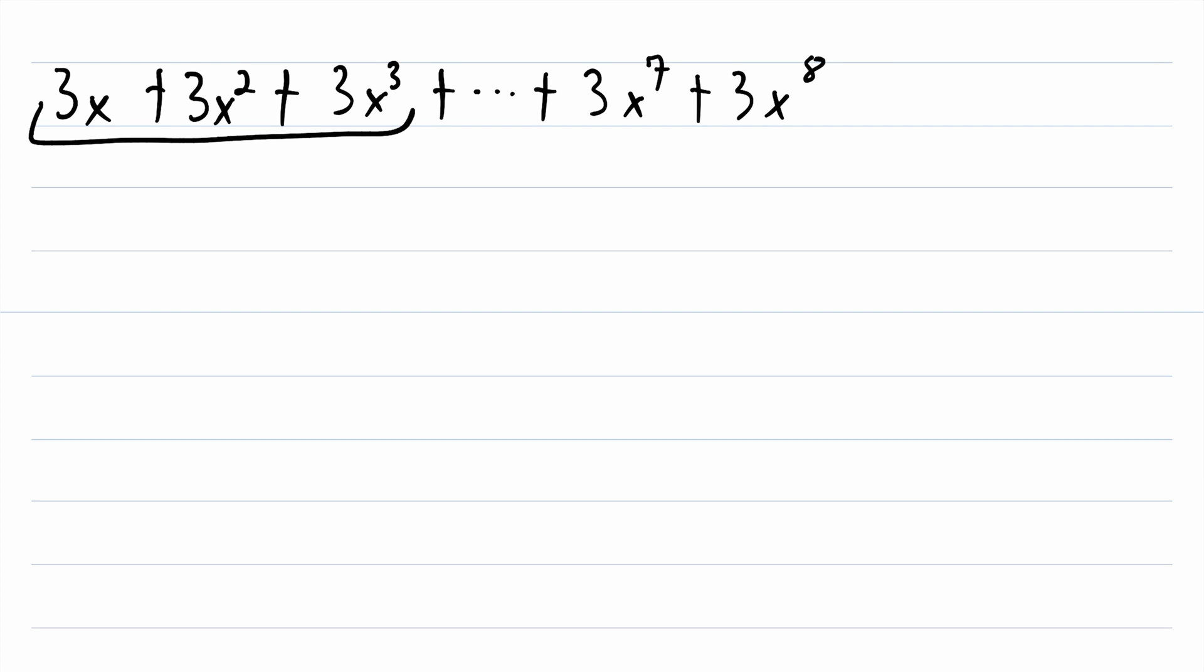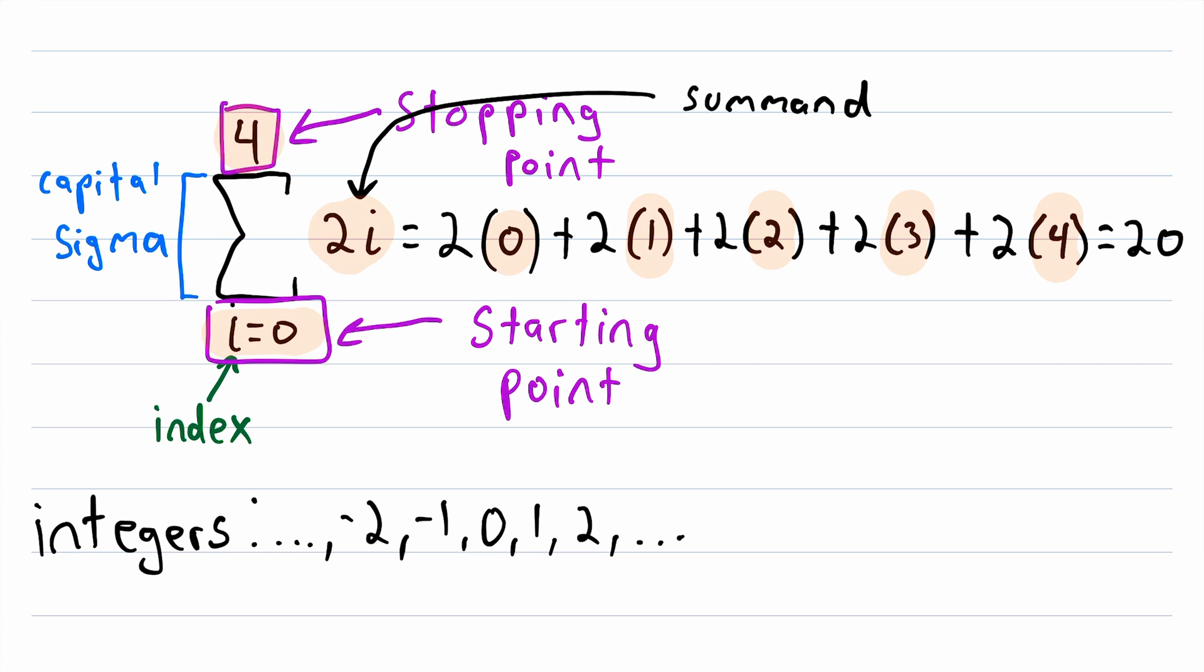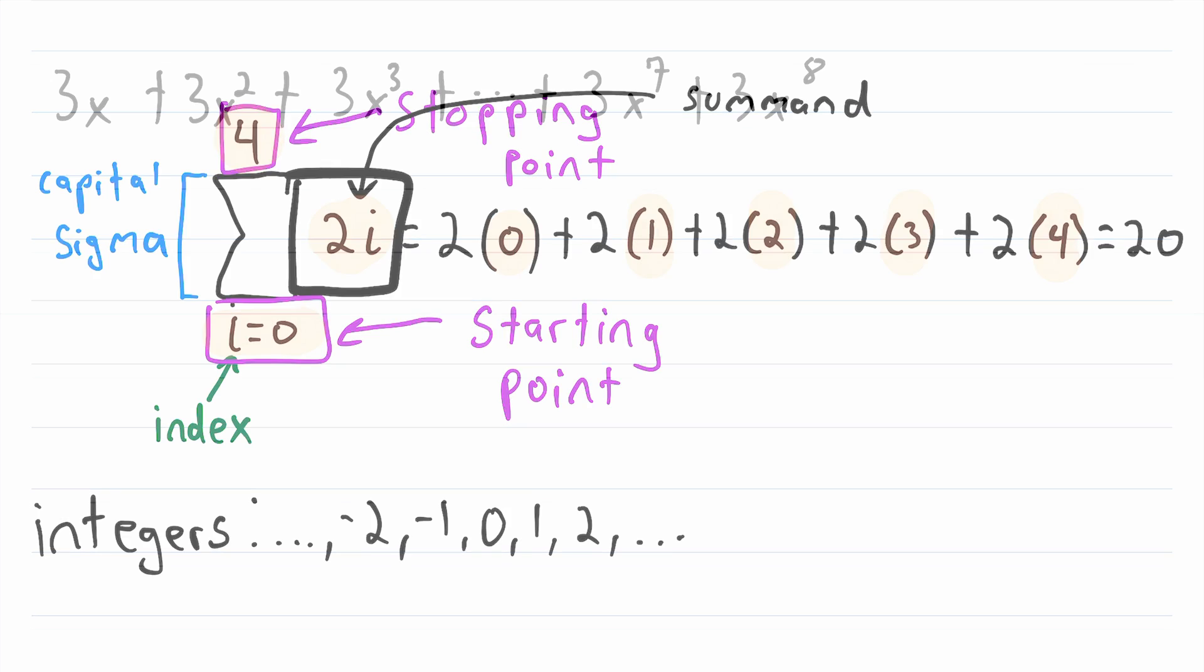Sometimes the pattern established isn't that clear. But with summation notation, we completely avoid ambiguity, because the pattern is very explicitly laid out for us right here. It tells us the general form of every term in the sum.